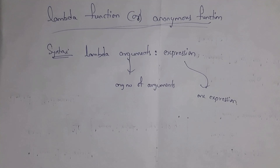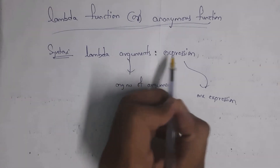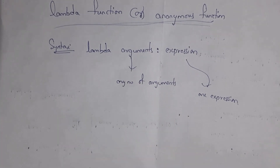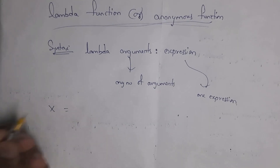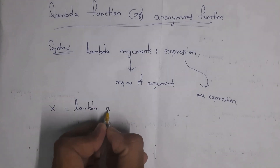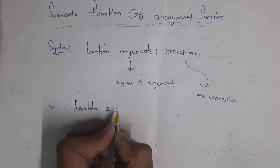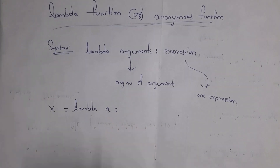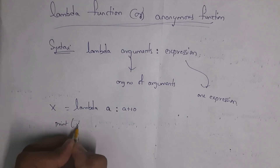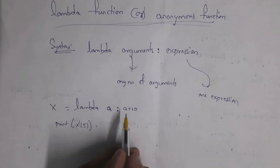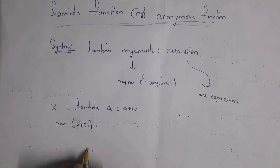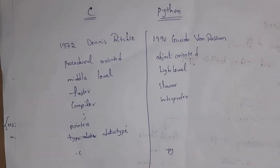Next I will explain the lambda function, also called an anonymous function. The syntax is: lambda arguments: expression. You can give multiple arguments but only one expression. For example, x = lambda a: a + 10. Here 'a' is the argument and 'a+10' is the expression. Calling print(x(5)) gives 5+10 = 15.